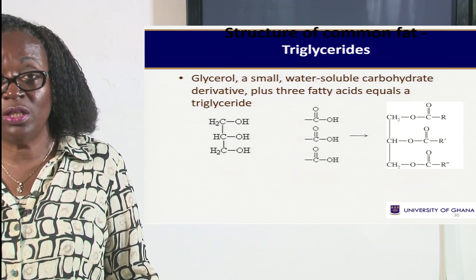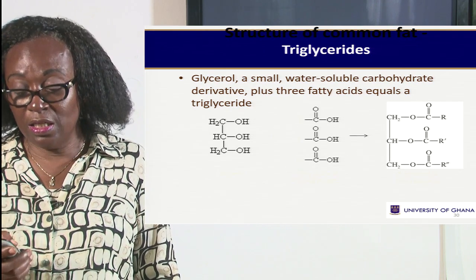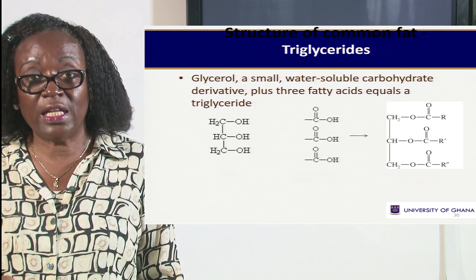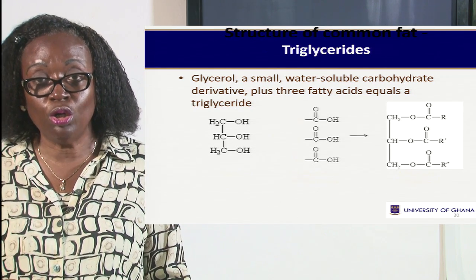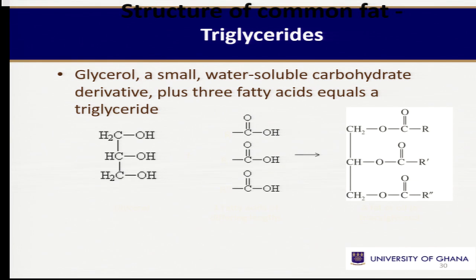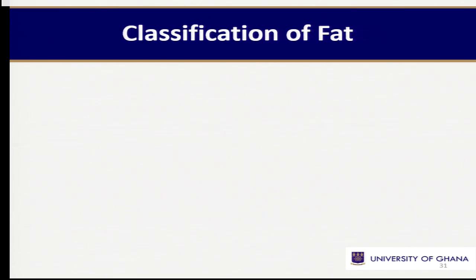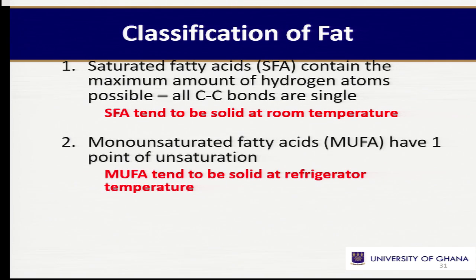Our common oils are the triglycerides. They are made up of a glycerol molecule — that is common to all of them — and to it is attached the fatty acid. So it is the fatty acid unit that differentiates the fats. The glycerol is a common unit to all of them, and it is the fatty acids that determine whether it is palm oil, groundnut oil, or coconut oil.